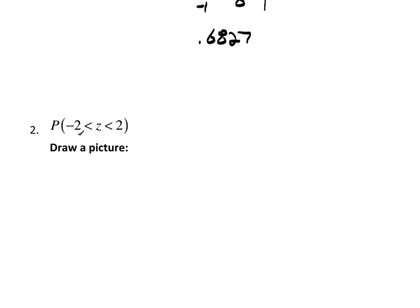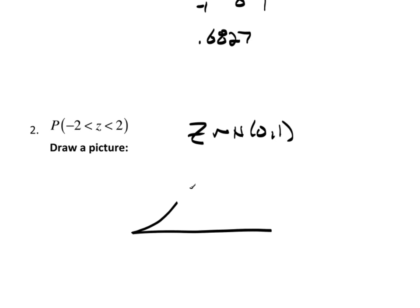For Z within two standard deviations — remember, Z is distributed as normal with mean 0 and variance and standard deviation of 1, so this would be two standard deviations from the mean. Again, if I draw a picture — and I don't care how silly you think it is drawing these pictures over and over again, do it. Students lose so many points getting confused on what their bounds are because they won't spend 10 or 50 seconds drawing a picture. Just do it; it'll save you a lot.